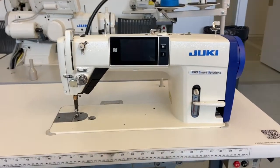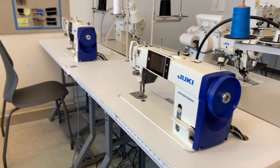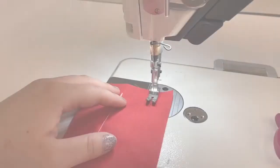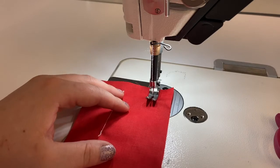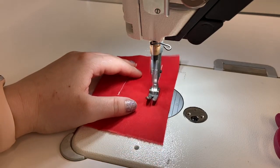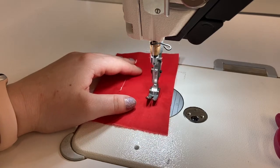The Apparel Production Lab houses two Juki Smart Solutions computerized high-speed straight stitch machines. These machines feature digitized adjustments for speed, stitch length, feed dog height to accommodate fabric thickness and improve seam quality, as well as automatic back stitching and thread cutting.